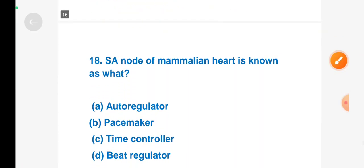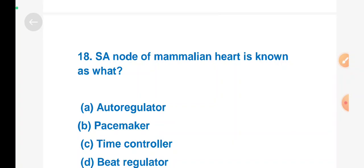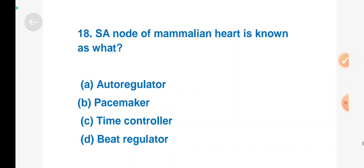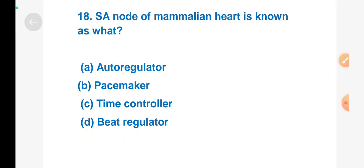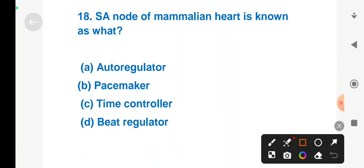Next question: SA node of mammalian heart is known as what? Option A: auto regulator, Option B: pacemaker, Option C: time controller, Option D: beat regulator. Right answer is Option B, pacemaker.